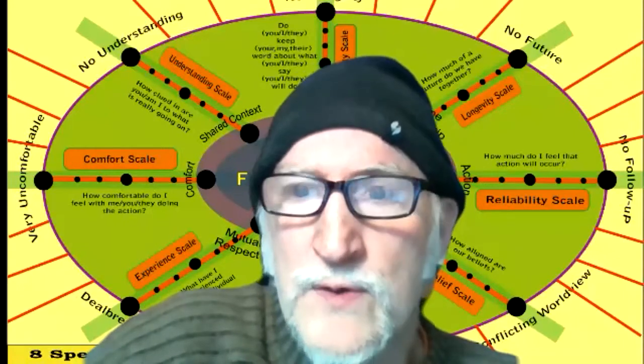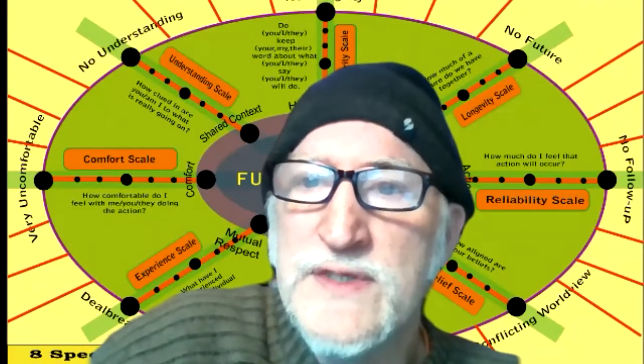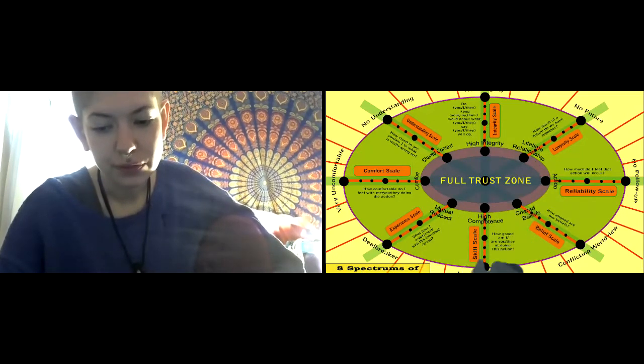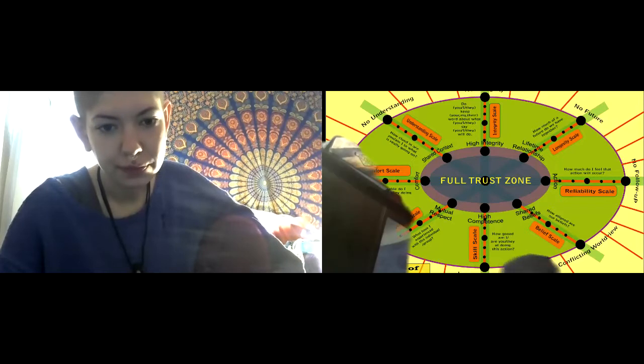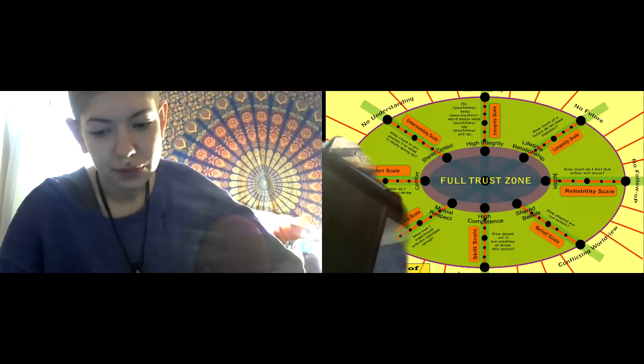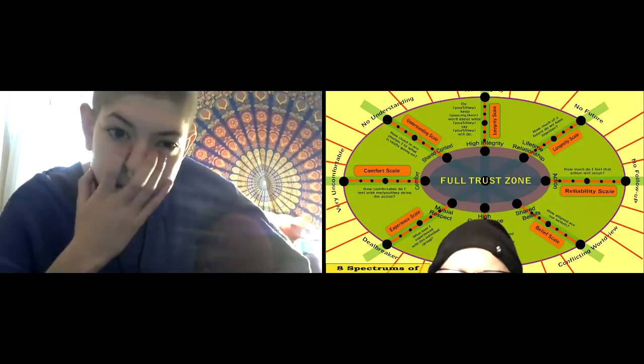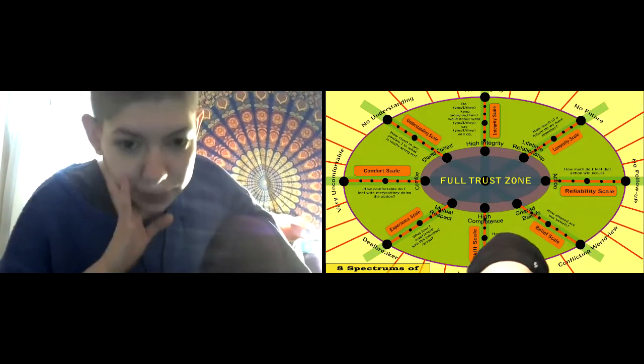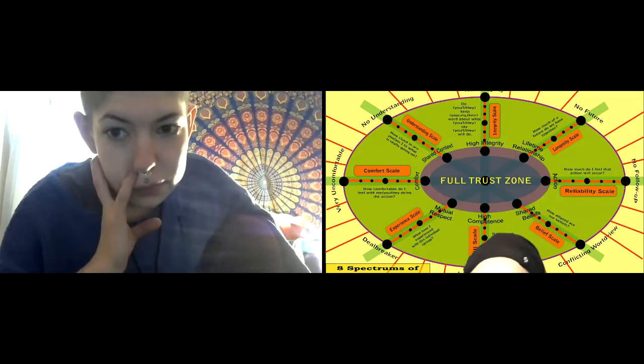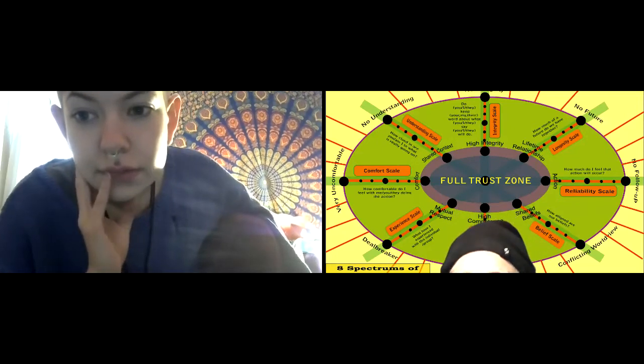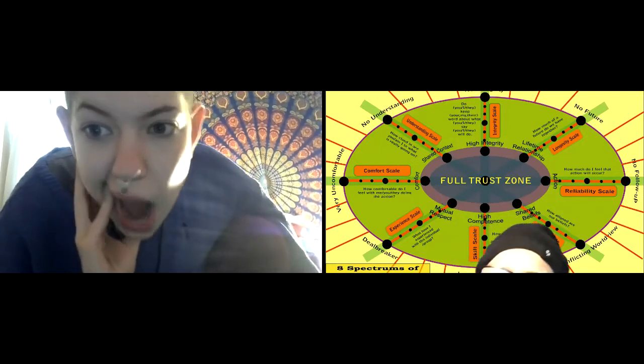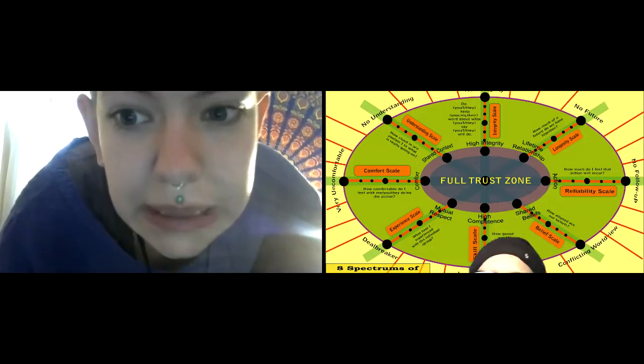So what's your background? This is the trust map. In the middle is the full trust zone and then all these different aspects of building trust. At the top is integrity, so if you have high integrity it's full trust zone, if low integrity it's outside of that. The future one, you either have a lifelong relationship or no future.